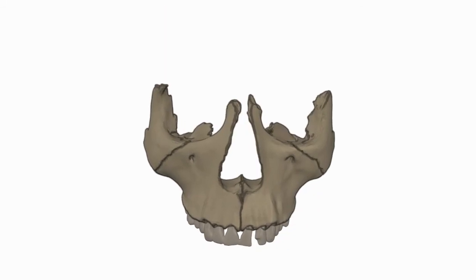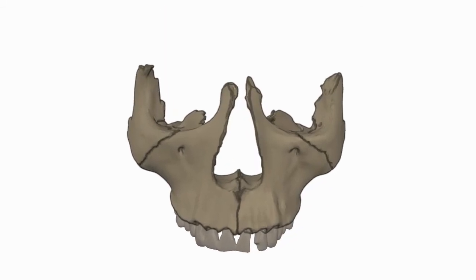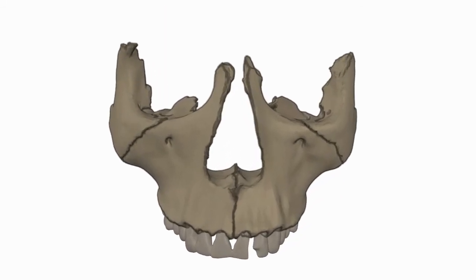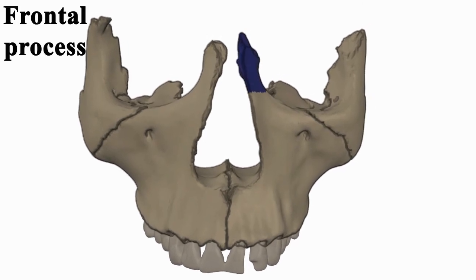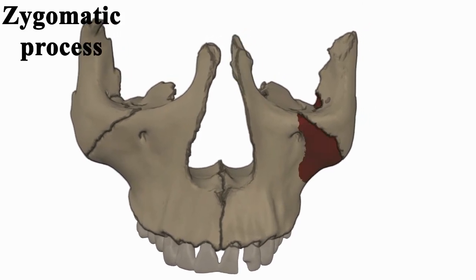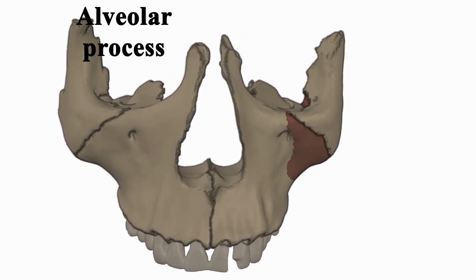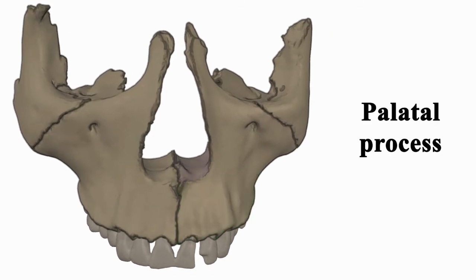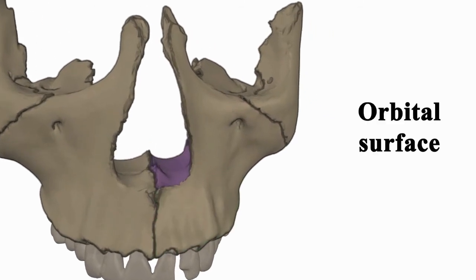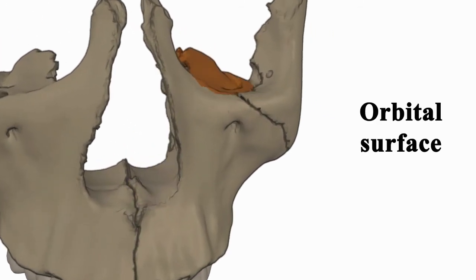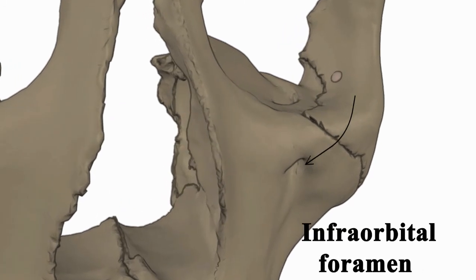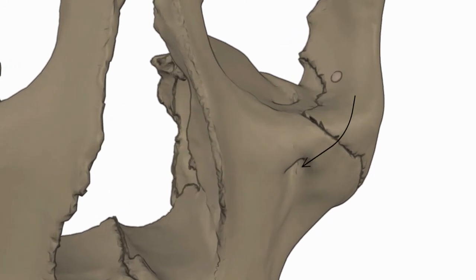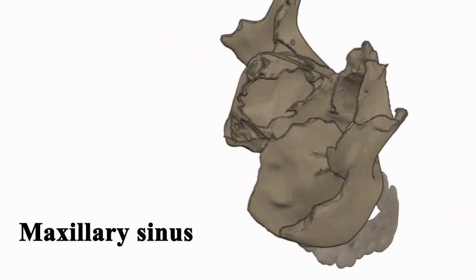The maxillary bone and zygomatic bone form the middle part of the face. The maxillary bone consists of frontal process, zygomatic process, alveolar process, palatal process, and orbital surface. It contains the infraorbital foramen and maxillary sinus.